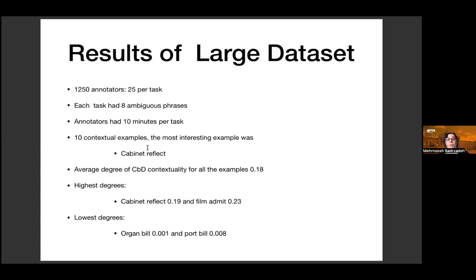Victor showed us how to calculate the degree of CbD contextuality. The average degree across all 10 examples was 0.18. The highest was 'film admits' at 0.23, the second highest was 'cabinet reflects' at 0.19. The lowest degrees were for phrases containing 'bill' — 'organ bill' and 'port bill' — which were very low contextual examples.